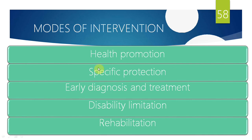Modes of intervention basically has five steps which fall into three levels of prevention. The first two steps — health promotion and specific protection — come under primary prevention. The second level, secondary prevention, is early diagnosis and treatment. The tertiary prevention is disability limitation and rehabilitation.